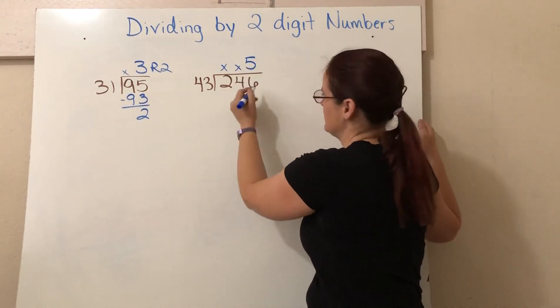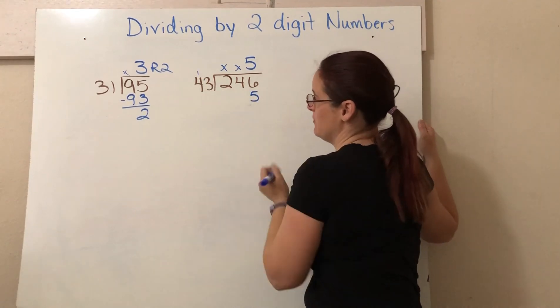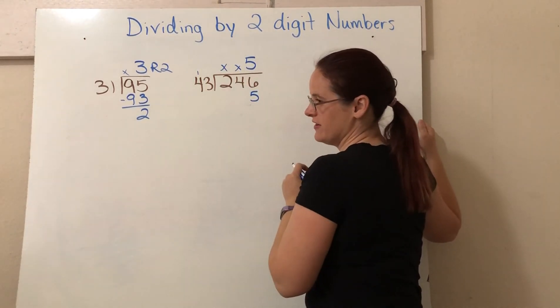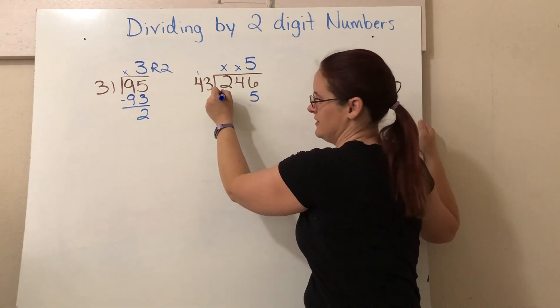Five times three? 15. 15, carry my one. Five times four? 20. Plus one? 21.